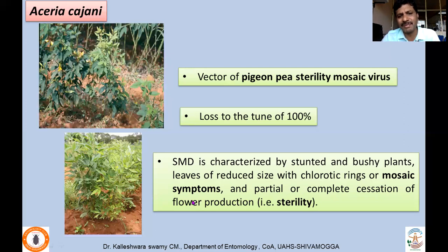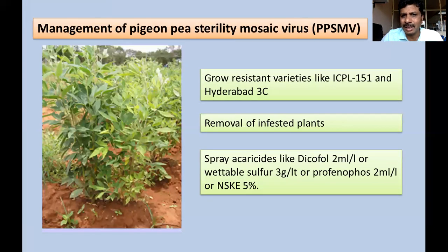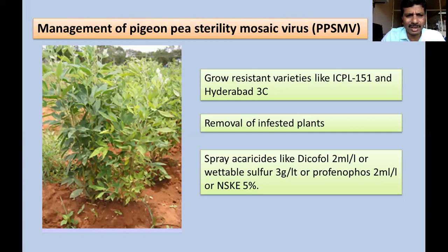The sterility mosaic disease is characterized by stunted and bushy plants, leaves of reduced size, chlorotic rings or mosaic symptoms, and partial or complete cessation of flower production. If virus infection occurs in the later stage, partial cessation may occur; if in the early stage, there is total cessation. Management includes rogging out infected plants, growing resistant varieties like ICPL-151, and spraying acaricides such as sulfur 3 g per liter, prophenophos 2 ml per liter, or NSKE 5 percent.